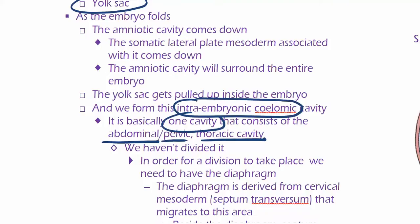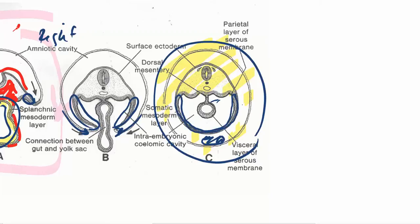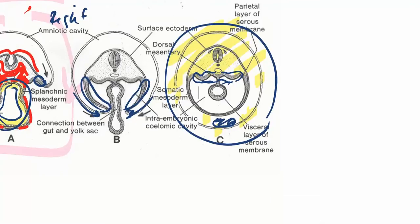The intraembryonic celomic cavity is this cavity right here — the cavity directly outside of your gut tube. Notice that this part is lined by somatic lateral plate mesoderm. The splanchnic lateral plate mesoderm is lining the gut tube itself, so all of this most likely should be somatic.